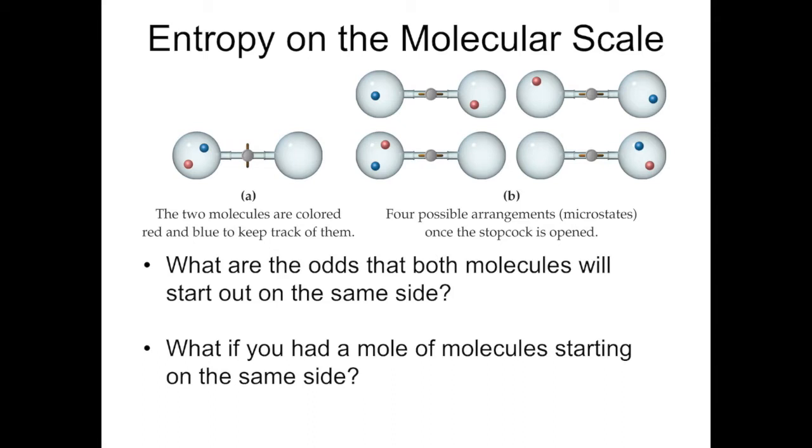But for now, consider what are the odds that both molecules will start out or end up on the same side. You can work this out pretty easily. The odds that one molecule, the blue one for example, will end up on the same side is one in two. So out of the four possible arrangements, the blue molecule ended up on the left hand side twice. That's two of the options out of four total options, or the odds are one in two.